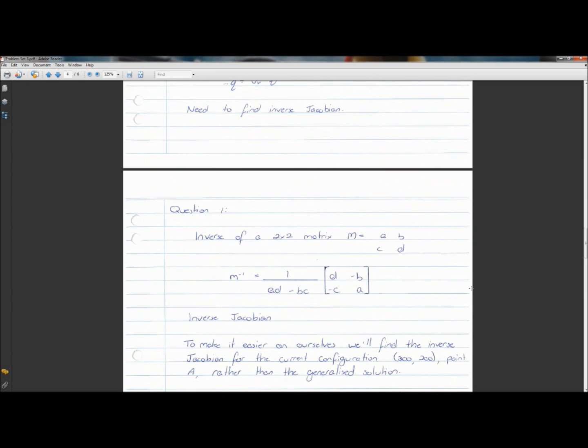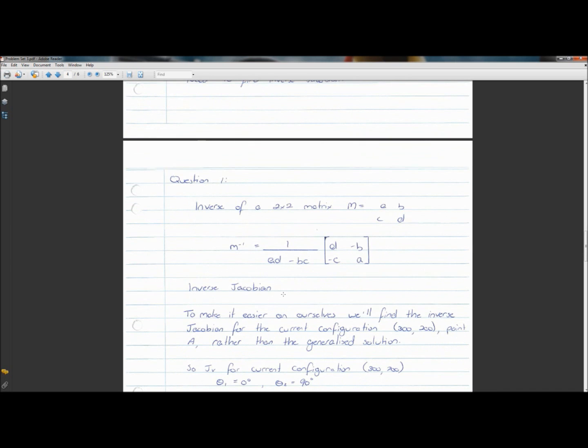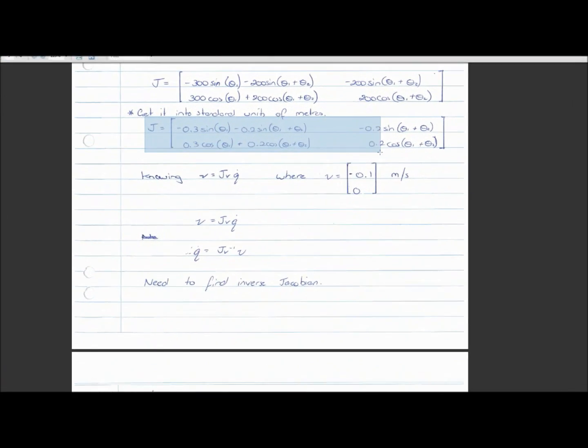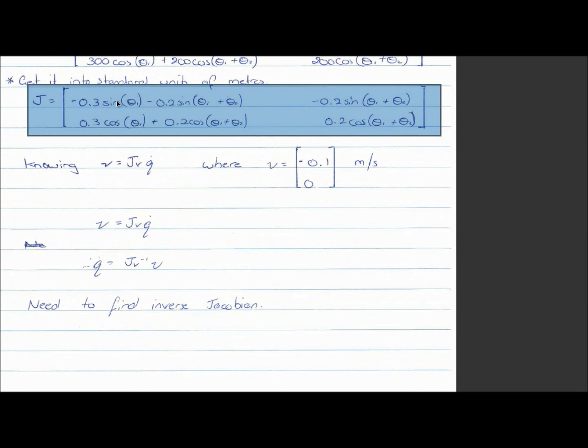So the inverse of a 2 by 2 matrix, if you don't already know, if this is your matrix, M equals, sorry, there's no brackets around this, so A, B, C, D, what you change, the inverse matrix, is simply 1 on A times D minus B times C, and then you swap the A and D terms around, so you put A down here and D up here, and you make the B and C terms negative. So to find the inverse Jacobian of this thing, it would actually be quite annoying to do A times D and B times C. Generally, when you do a revolute prism...